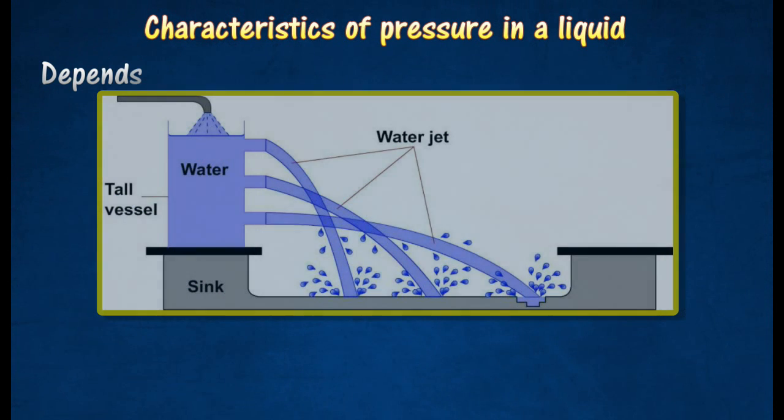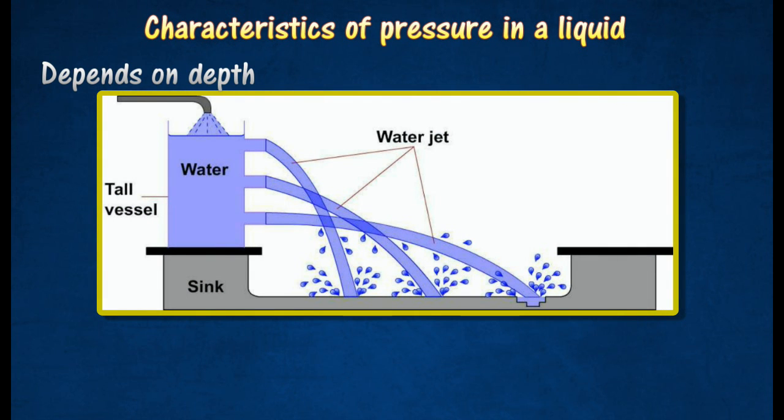Holes are made at different heights on the side of a tall vessel. These holes are fitted with side tubes which are plugged up, and the vessel is filled with water.